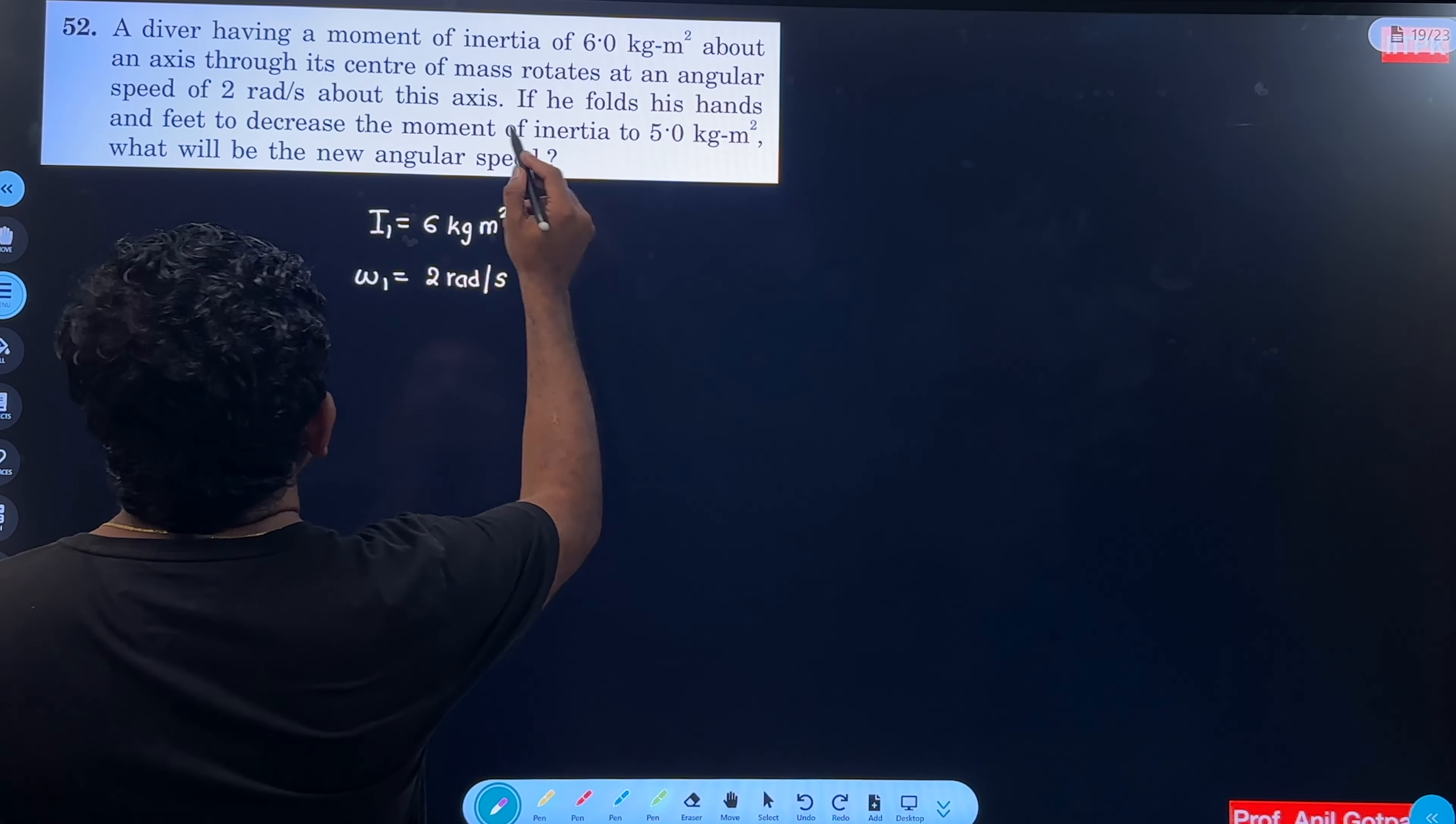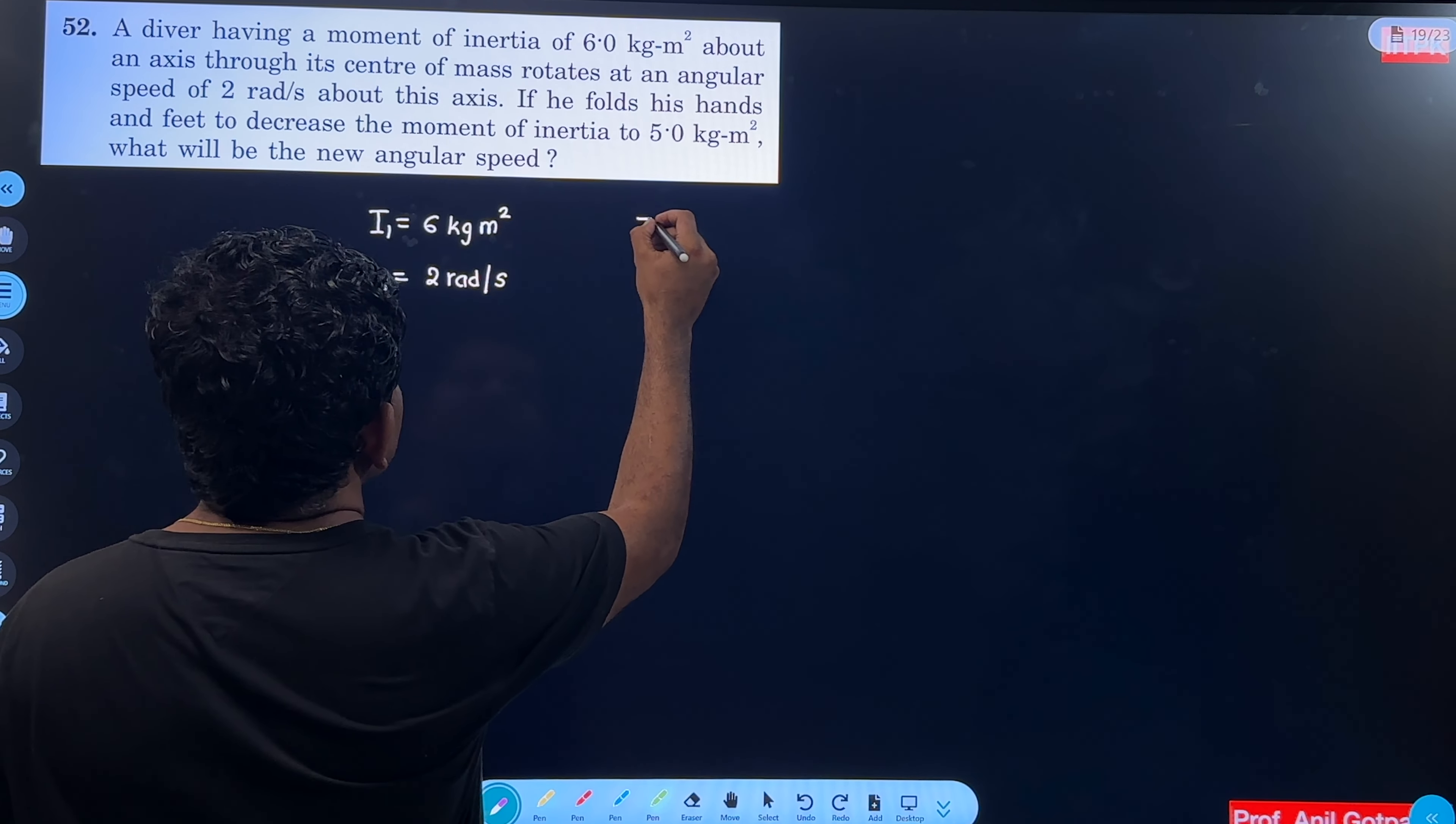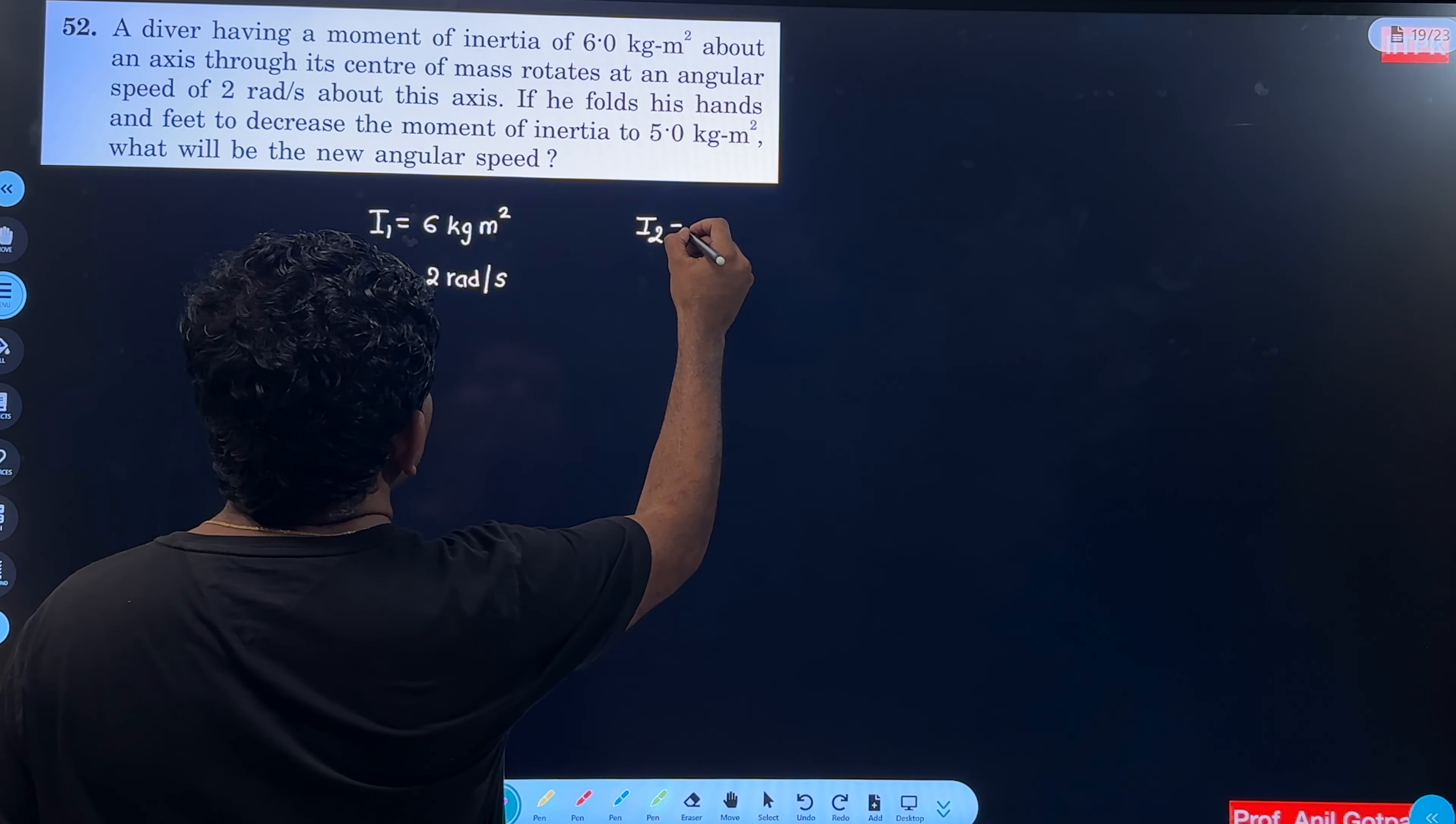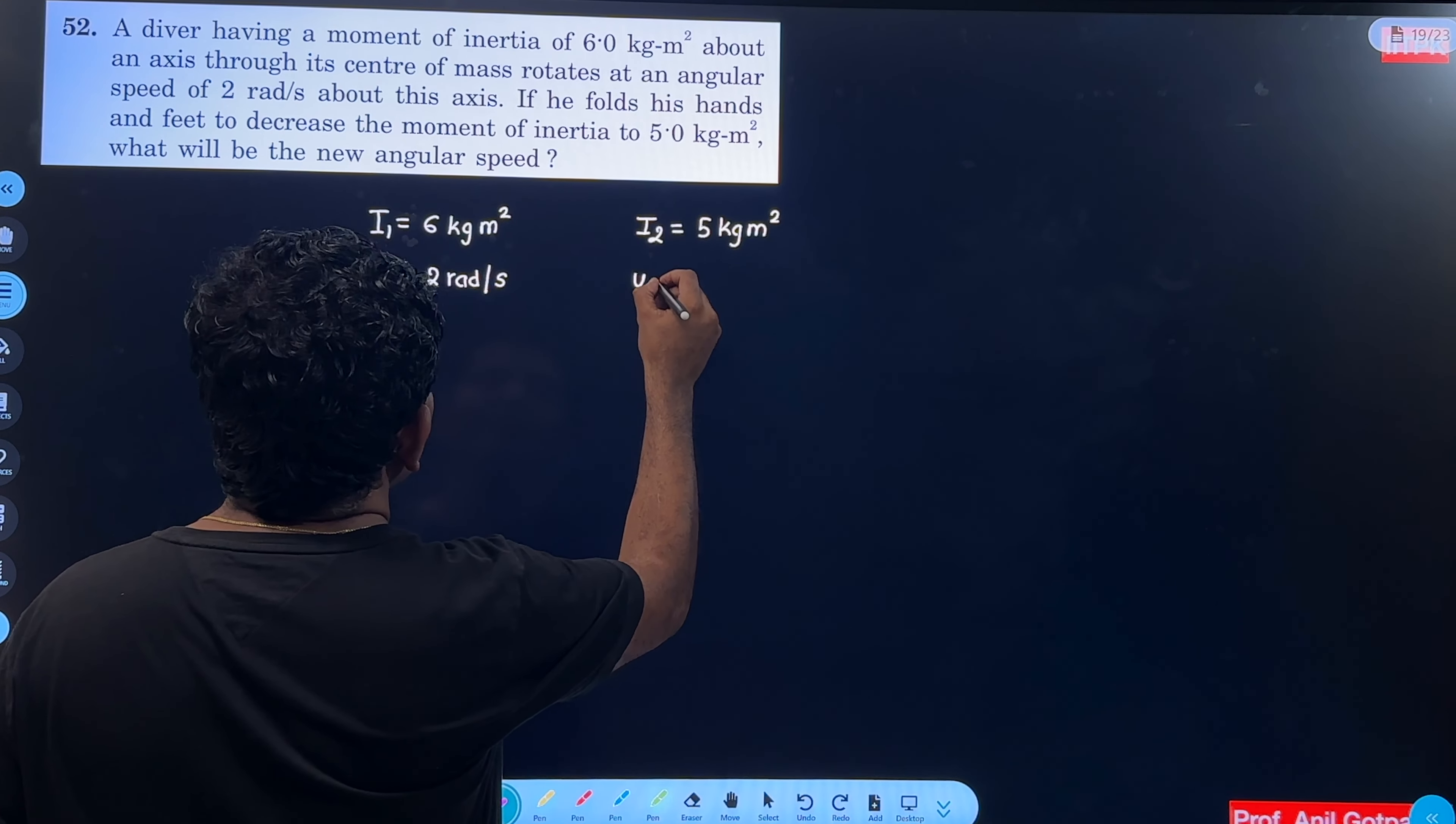Correct? So if he folds his hands and feet to decrease the moment of inertia 2, that means new moment of inertia is 5 kg meter square. Correct? We will find new angular speed.